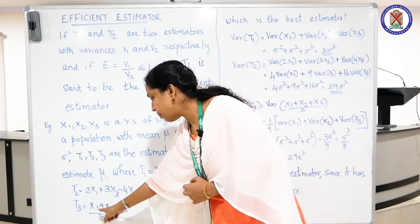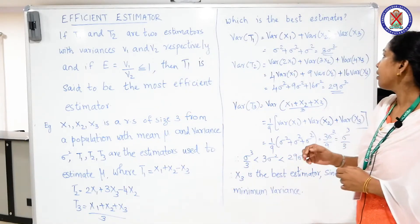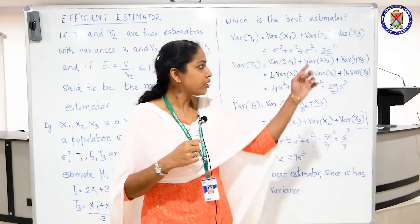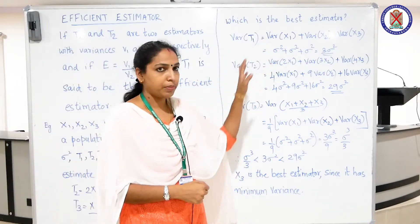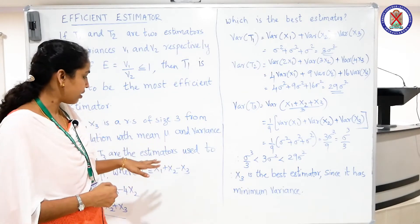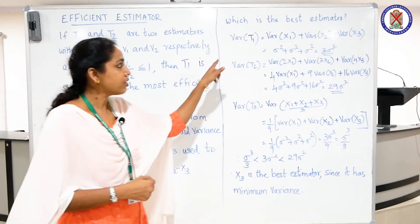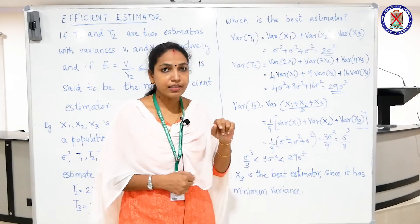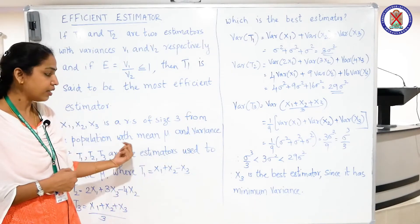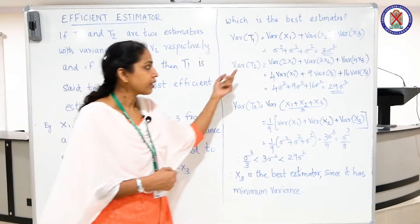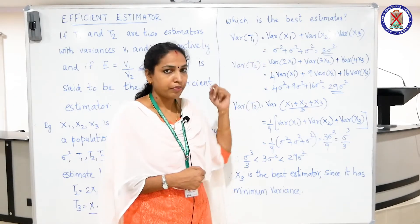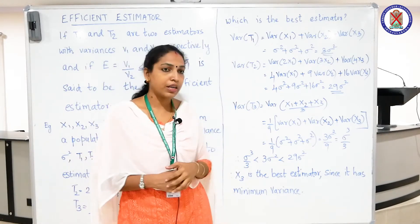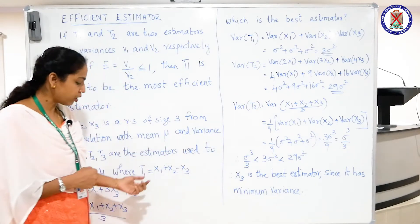We find the variance of t1 = Var(x1 + x2 - x3). Since the random samples are independent, Var(t1) = Var(x1) + Var(x2) + Var(x3). Each has variance sigma squared, so Var(t1) = sigma squared + sigma squared + sigma squared = 3 sigma squared.